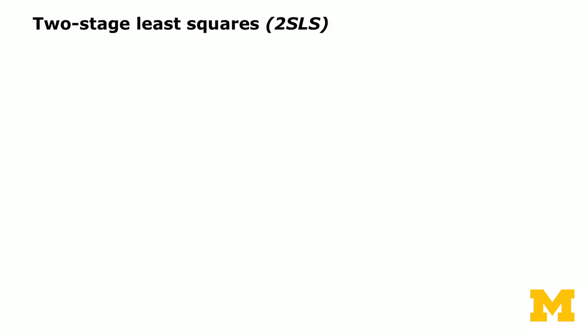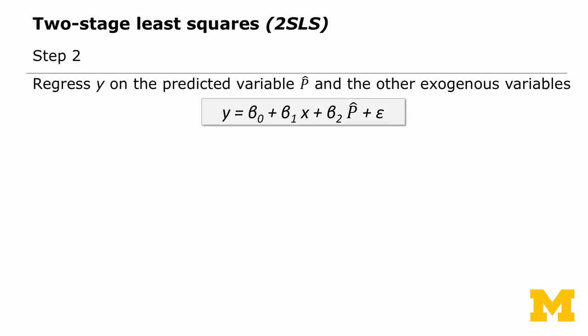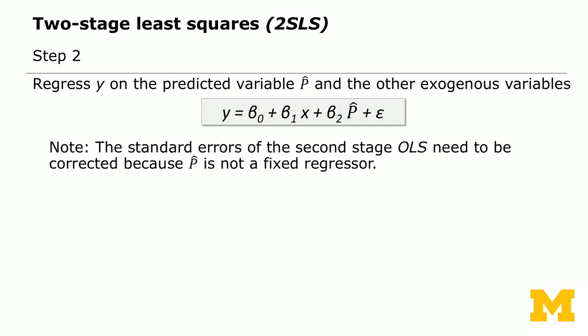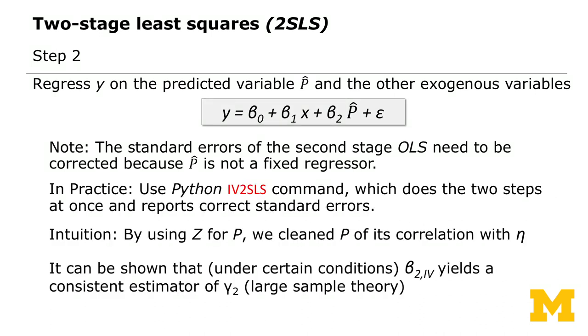In step two, you regress y on the predicted value p-hat and the other exogenous variables. The new equation is y equals beta_0 plus beta_1 times x plus beta_2 times p-hat plus epsilon. You have to be careful that the standard errors of the second-stage OLS need to be corrected, because p-hat is not a fixed regressor. In practice, the software command automatically does the two steps at once and reports the correct standard error — so that's already being adjusted.